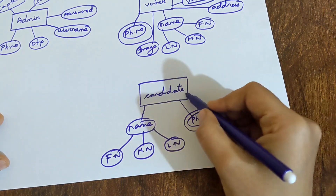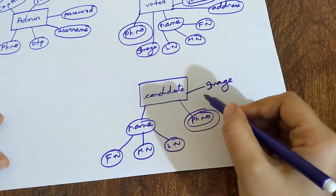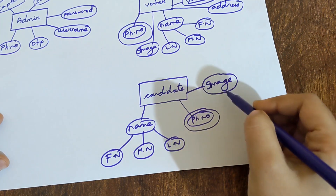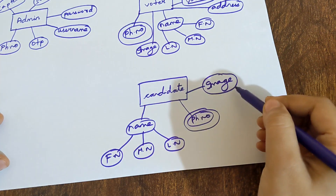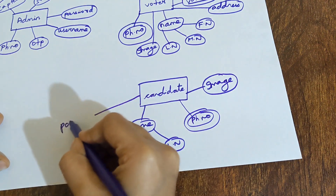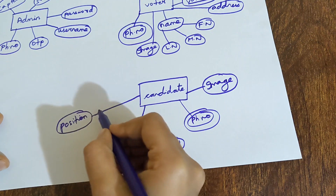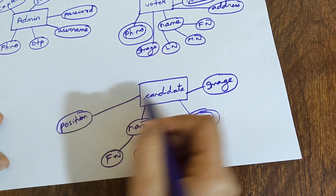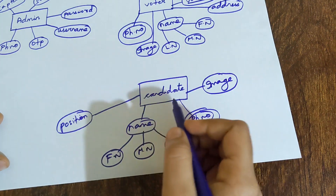Next is the image of the Candidate. Whoever is standing for the election, their image is very important, so the photo must be uploaded. Next is position — for which position the candidate is standing, whether it is for MLA or chief minister or another position, that must be mentioned. So position is also an attribute of Candidate.